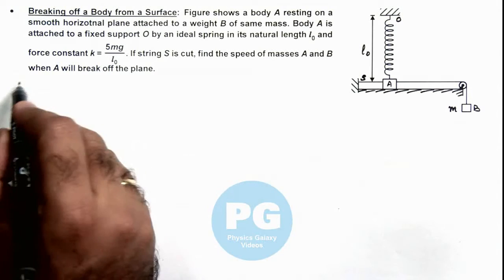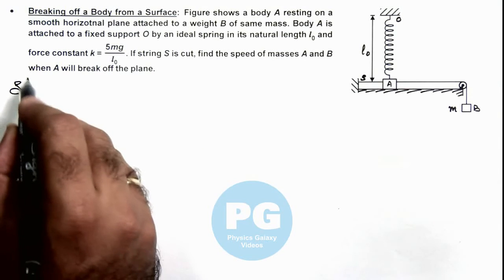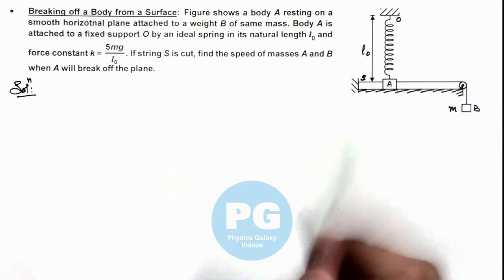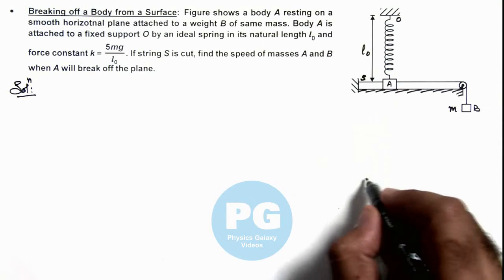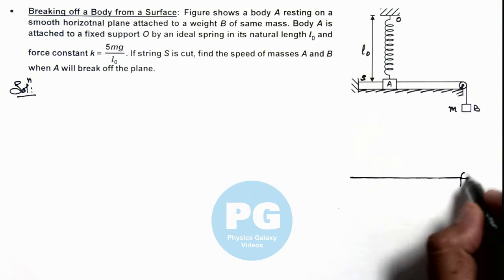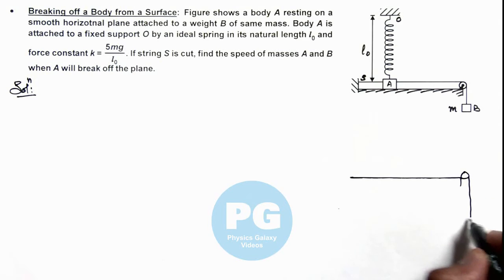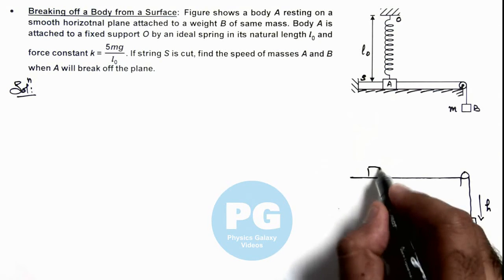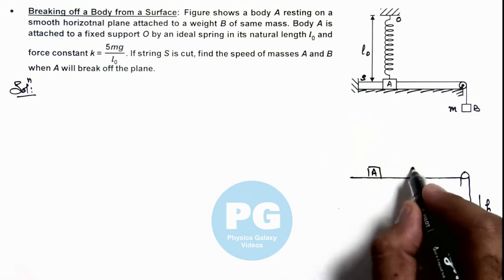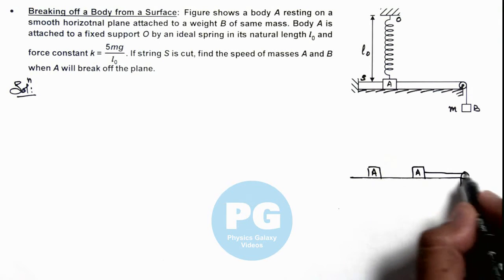We need to first analyze when body A will break off. If we redraw the situation, when mass B falls down by a distance h, body A also displaces forward by the same distance h.